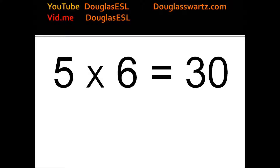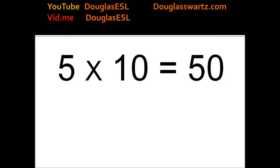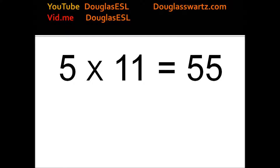5 times 6 equals 30. 5 times 7 equals 35. 5 times 8 equals 40. 5 times 9 equals 45. 5 times 10 equals 50. 5 times 11 equals 55.